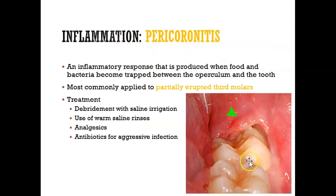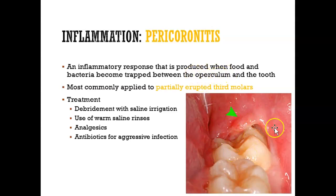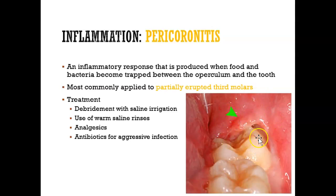Pericoronitis is when you have your third molar come in and it's partially erupted. When you have a partially erupted third molar, you have an extra flap of gum sticking out — that extra flap is known as the operculum. If you have food and bacteria stuck in there, it can cause the gum to get inflamed, and when the gum gets inflamed and maybe even painful, it's called pericoronitis.